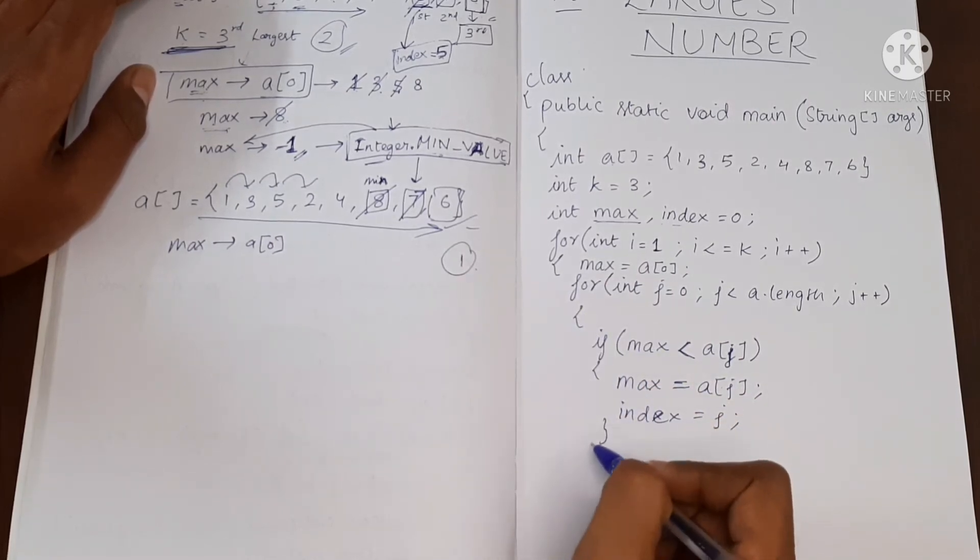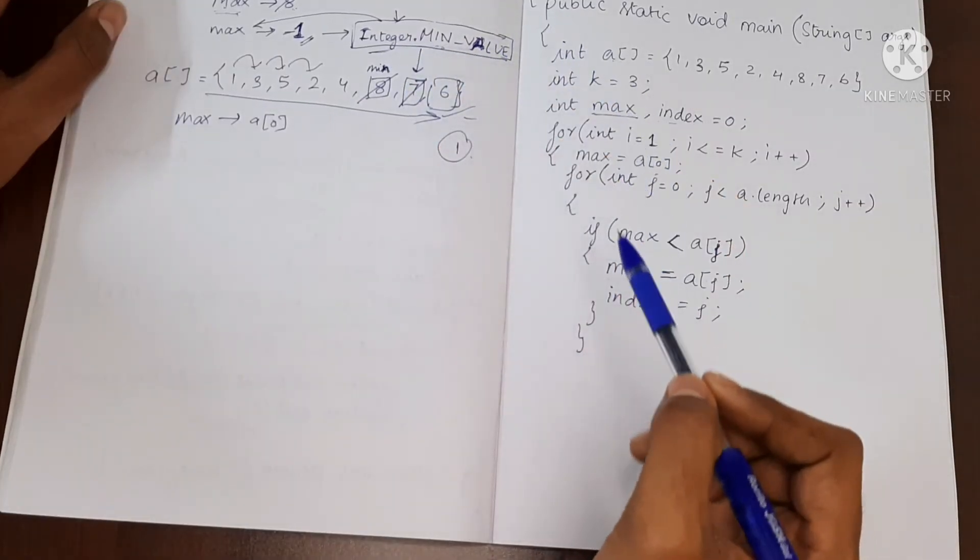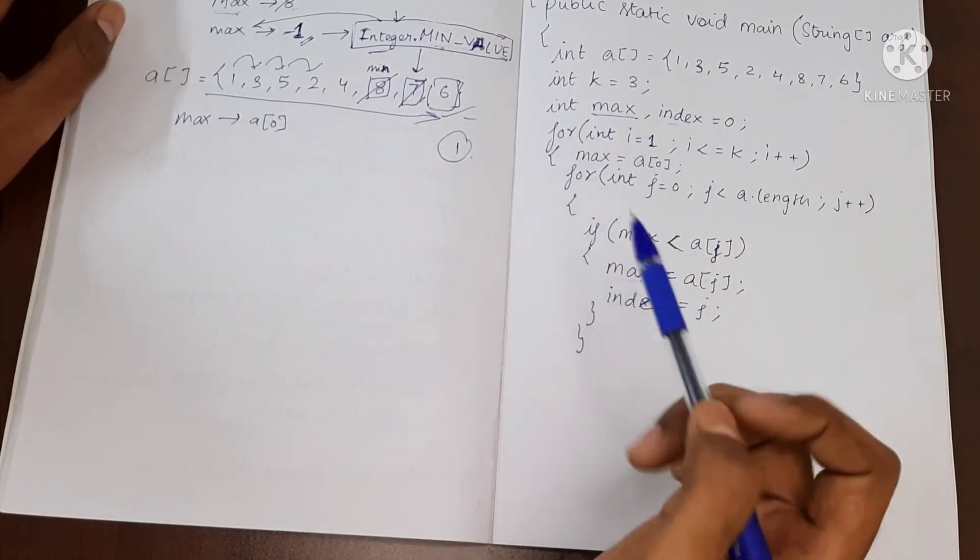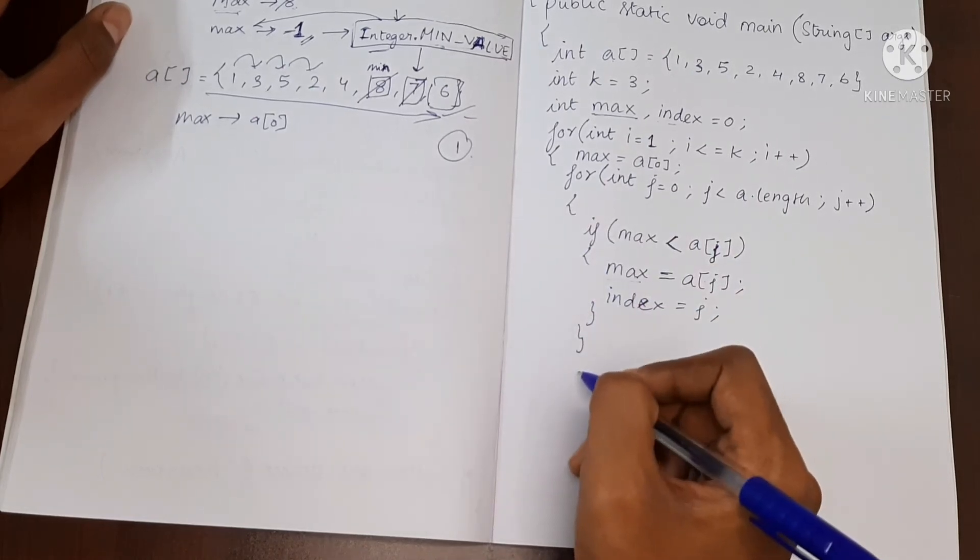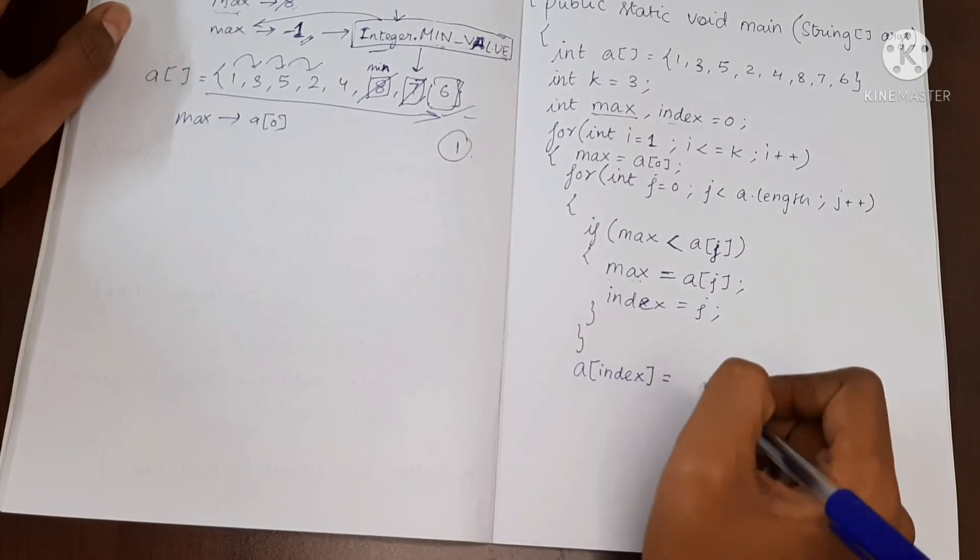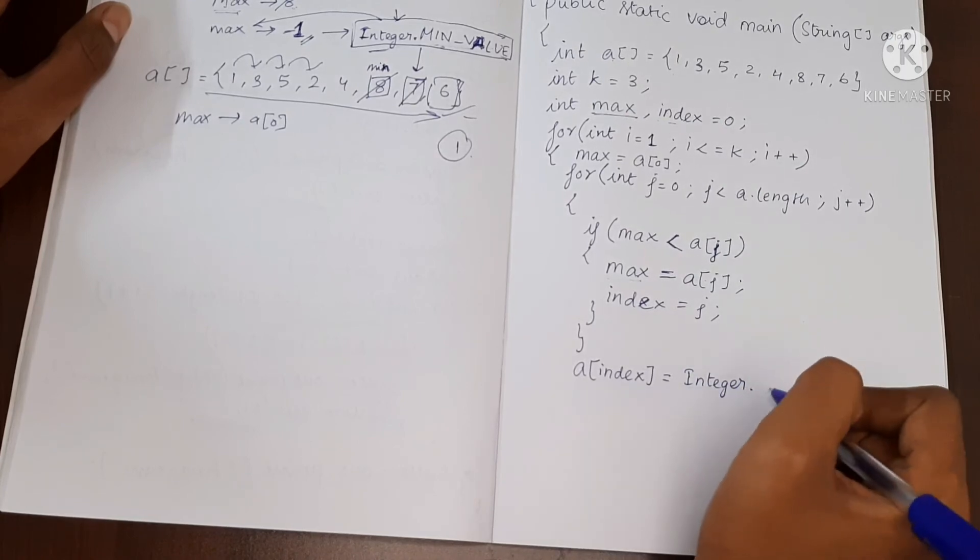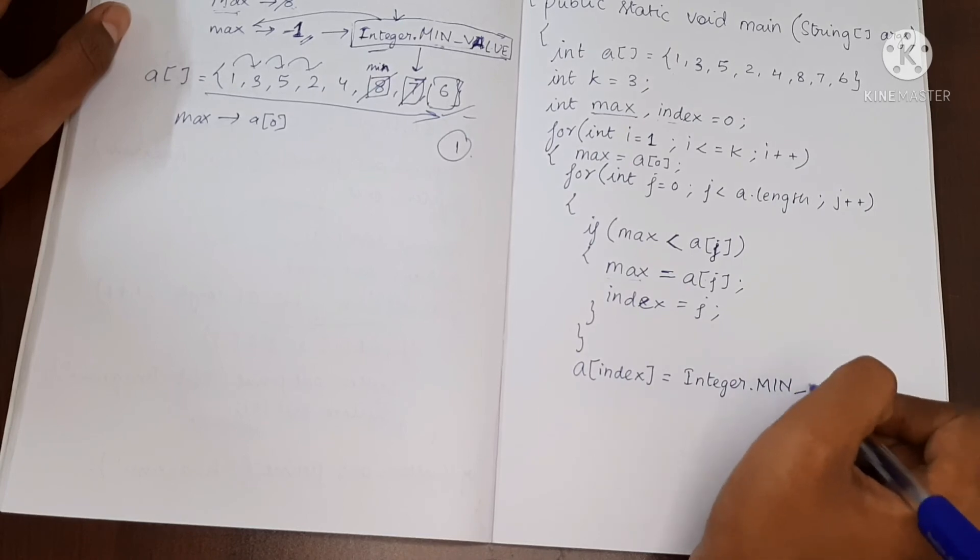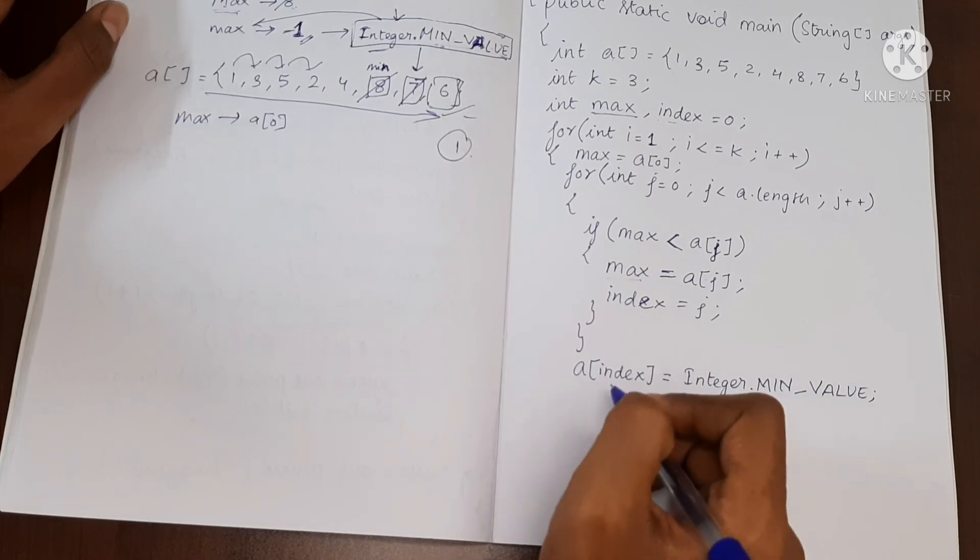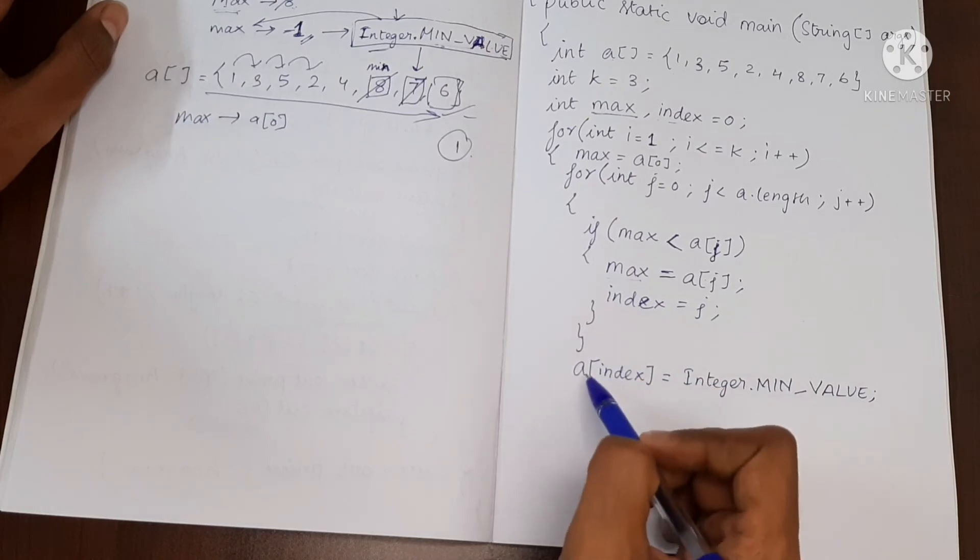So after we find the maximum value, we are going to change it into Integer.MIN_VALUE or you can just put minus 1 if you know your array is going to have only positive numbers. So let me just do this. So a of index equal to Integer - is capital - .MIN_VALUE - these all are uppercase. Okay, so now we have successfully found the maximum value and we have changed it into some other value.